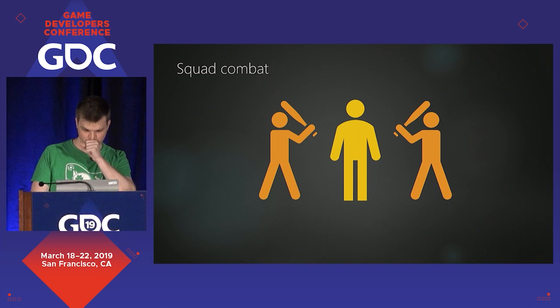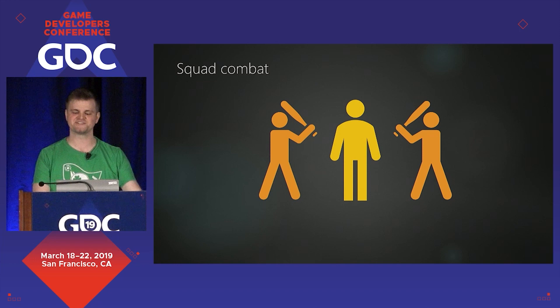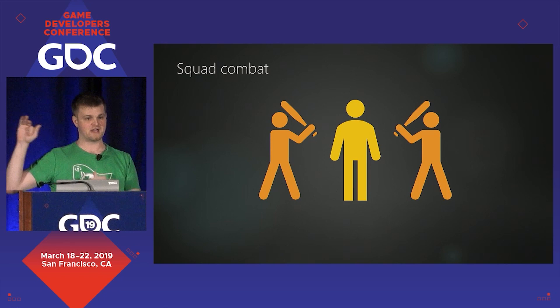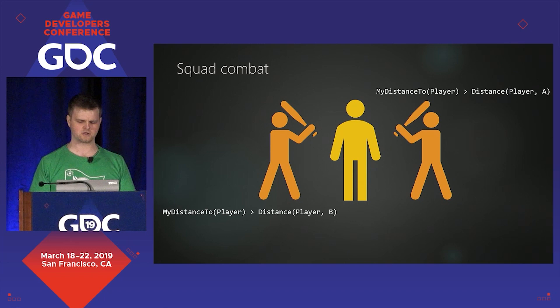Another example: squad combat. You've got a squad of two enemies, and you want to avoid overwhelming the player, so only the closest one engages while the other waits their turn — like a kung fu action film. Each enemy measures their own distance to the player, then measures the other enemy's distance. If it's the closer one, it attacks; if not, it waits. But if both enemies are about the same distance, and each calculates from a different frame of reference, each one thinks their squadmate is a little closer and waits their turn. The result: two enemies standing around checking their watches.